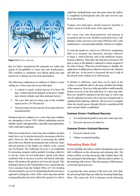Tandem rotor helicopters should maneuver laterally to achieve clean air in both rotors simultaneously. For vortex ring state demonstrations, training, recognition, and recovery should be performed from a safe altitude allowing recovery no less than 1,000 feet AGL, or the manufacturer's recommended altitude, whichever is higher. To enter the maneuver, come to an OGE hover with little or no airspeed, decrease collective to begin a vertical descent, and as turbulence begins increase collective. Allow the sink rate to increase to 300 FPM or more as attitude is adjusted to obtain airspeed less than 10 knots. When the aircraft begins to shudder, additional up collective increases vibration and sink rate. Recovery should be initiated at the first sign by applying forward cyclic to increase airspeed and/or simultaneously reducing collective. Recovery is complete when the aircraft passes through effective translational lift and a normal climb is established.